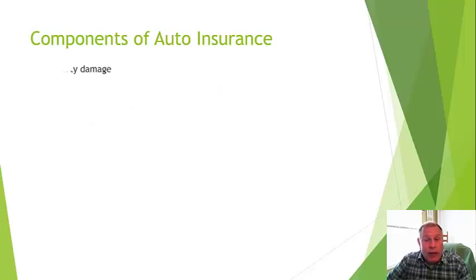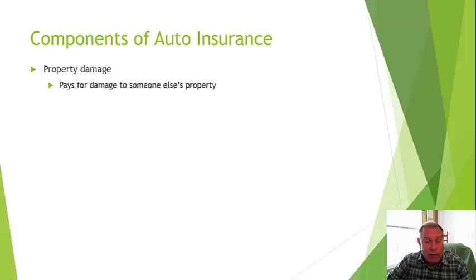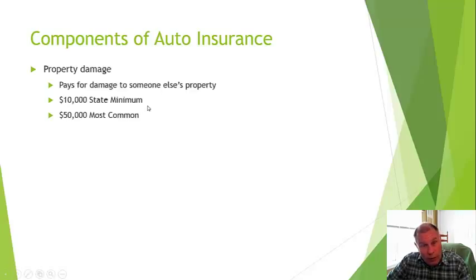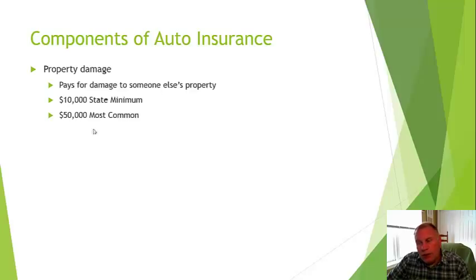Next is property damage — this covers damages to someone else's property when you're at fault in a car accident. The New York State minimum is $10,000, but $50,000 is the most common. If you damage a car worth $25,000 and you only have $10,000 coverage, you can be held liable for the additional $15,000. And today many cars are worth more than $50,000, so you want to take a look at that.